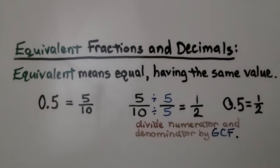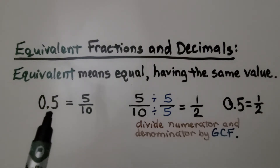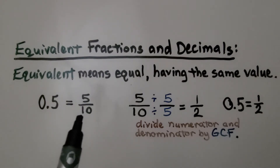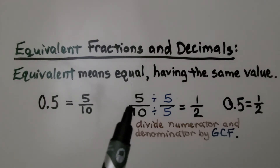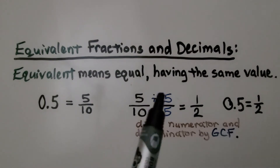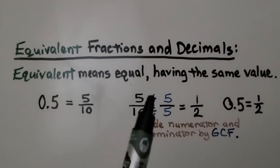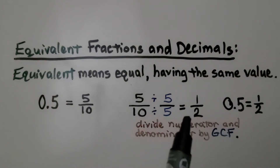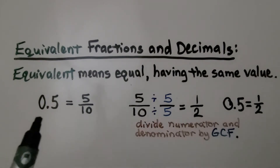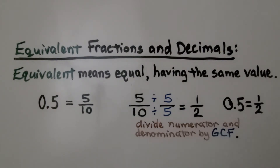For equivalent fractions and decimals, equivalent means equal — having the same value. 5 tenths as a decimal is equal to 5 tenths as a fraction. We can simplify it by dividing the numerator and denominator by their greatest common factor. We divide 5 by 5 which is 1, and 10 by 5 which is 2. So it simplifies to 1 half. That means the decimal 0.5 is equal to 1 half.